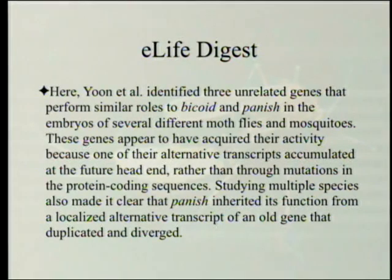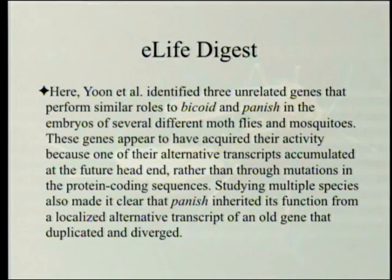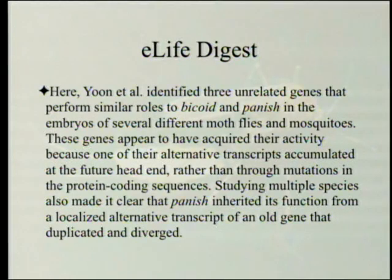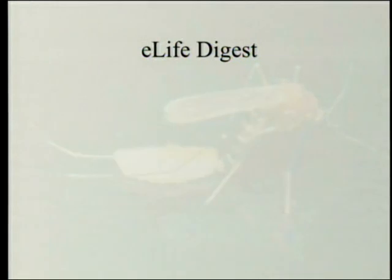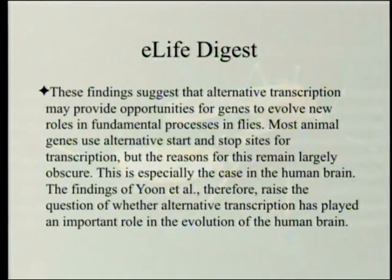Yoon et al. identified three unrelated genes that performed similar roles to bicoid and pannish in the embryos of several different moth flies and mosquitoes. These genes appear to have acquired their activities because one of their alternative transcripts accumulated at the future head end, rather than through mutation in the protein coding sequences, although one of them also has an alternative transcription. Studying multiple species also made it clear that pannish inherited its function from a localized alternative transcript of an old gene that duplicated and diverged.